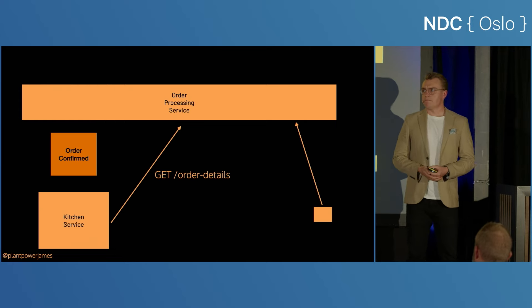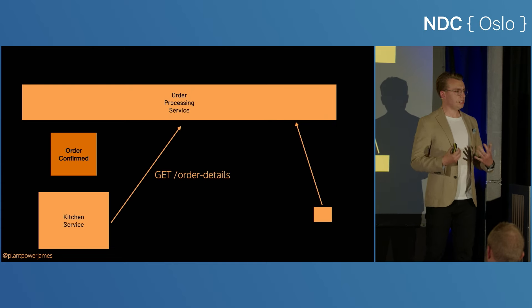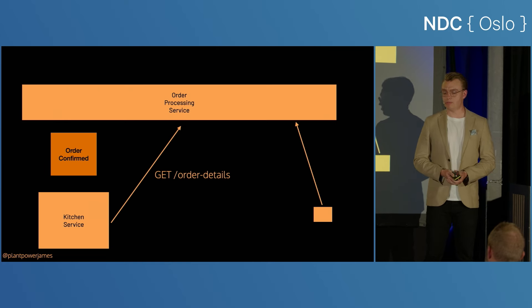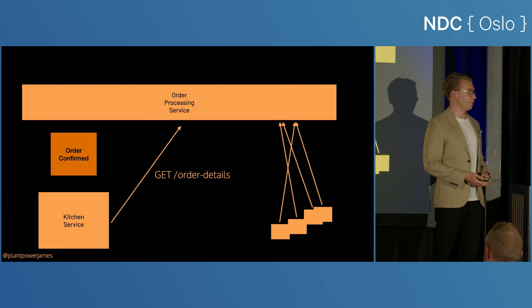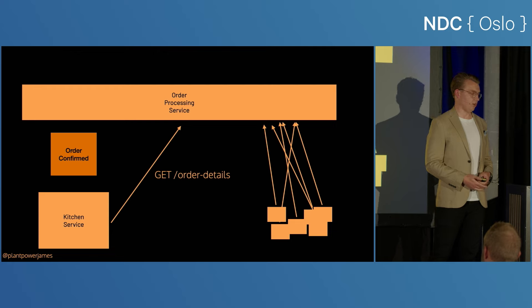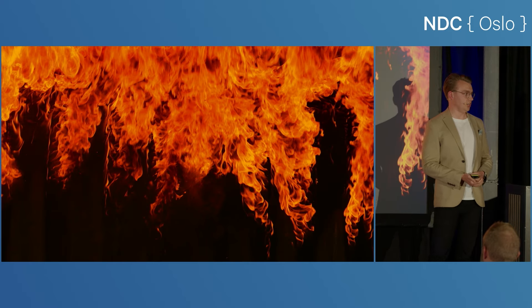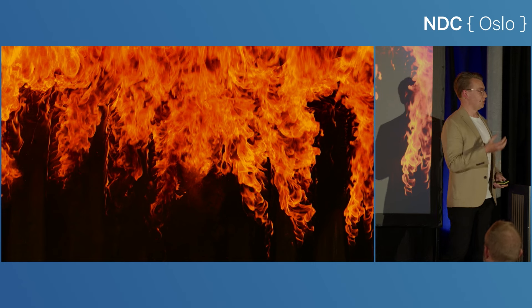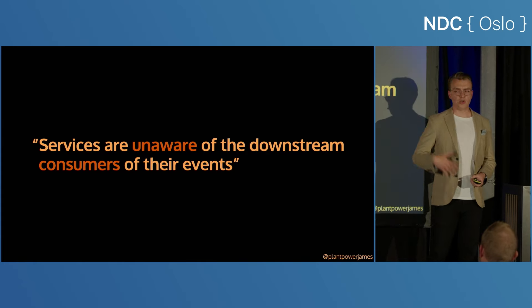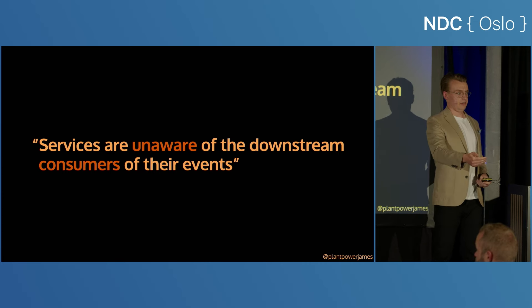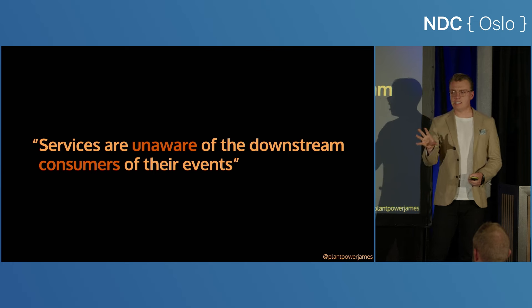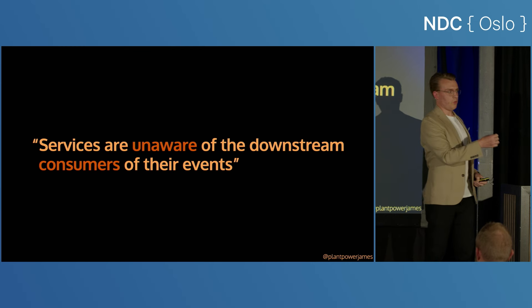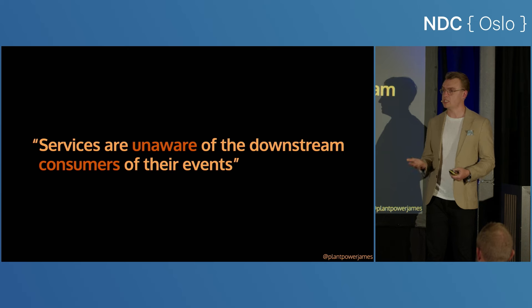So you need to make a callback — reach back into the order processing service to get the details of the order. You've received this small notification event and you're going to reach back and get more information. All you've really done is shifted that synchronous communication around: instead of the order service calling the kitchen service, the kitchen service now calls the order service. The more subtle problem is that because you've got events flying around, any other system in your organization can subscribe to them. Maybe three more systems decide to get that event too — they all decide to reach back — and eventually your order processing service goes down because you've got a potentially infinite number of downstream systems all calling back.